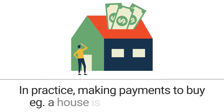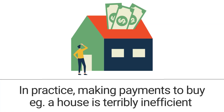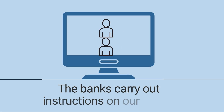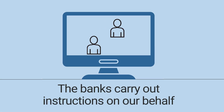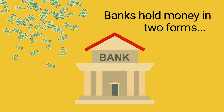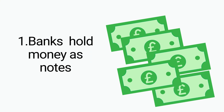In practice, making payments — say to buy a house — doing so directly is terribly inefficient. The banks carry out instructions on our behalf to make payments. They keep it in two forms: they have in their vaults, behind the counter, some of this stuff, and that actually takes the physical form of notes.